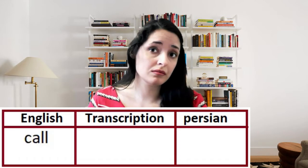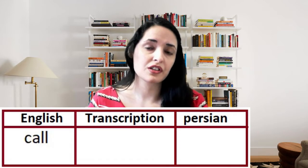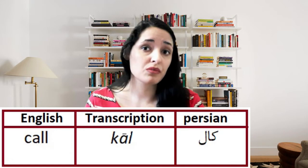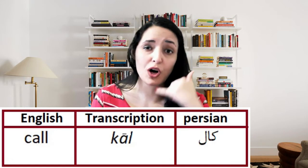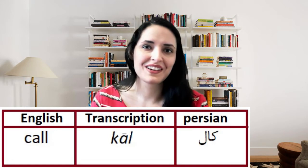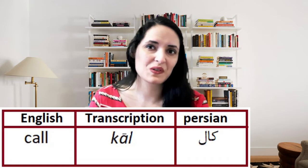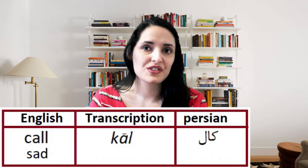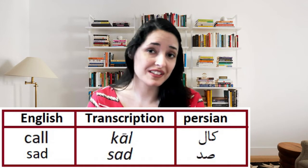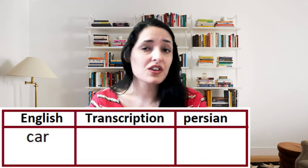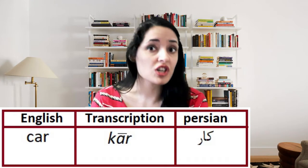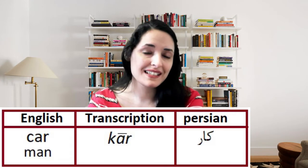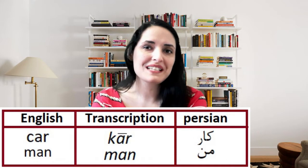For example, 'call' in English has its familiar meaning, but in Persian 'call' means 'unripe' — not 'call me' or other meanings used in English. Another is 'sad' — in Persian, 'sad' means 'hundred'. Or 'car' — in Persian, 'car' means 'job'. And the word 'man' — in Persian, 'man' means 'I'.